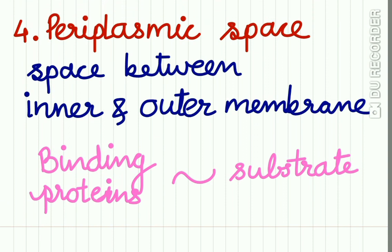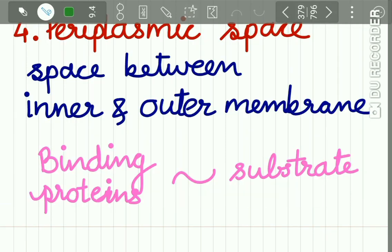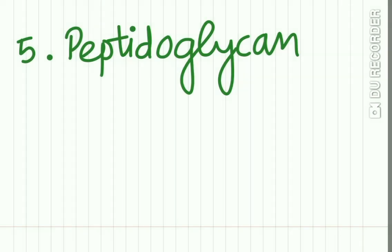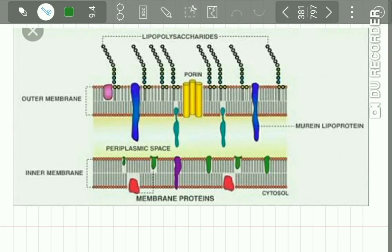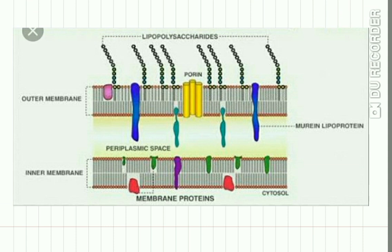The fourth layer is the periplasmic space — the space between the inner and outer membrane — which contains various binding proteins for specific substrates. The fifth layer is the peptidoglycan layer. In the diagram you can see all five layers of the gram-negative cell wall: the lipoprotein layer, the outer membrane, the lipopolysaccharide (LPS) layer, the periplasmic space, and the peptidoglycan layer.